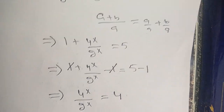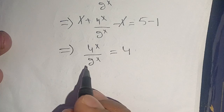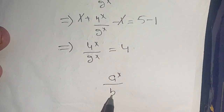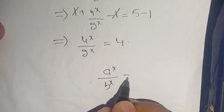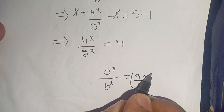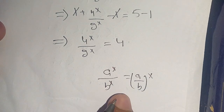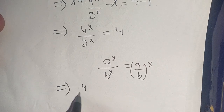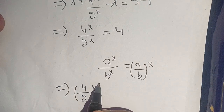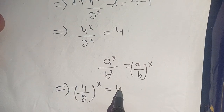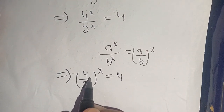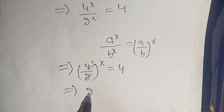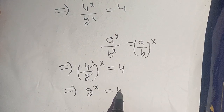Our next step uses the identity: a raised to power x divided by b raised to power x equals (a/b) whole raised to power x. Applying this identity, the left hand side becomes 4 divided by 2, whole raised to power x, equal to 4. Now 4 divided by 2 is 2, so we get 2 raised to power x equals 4.